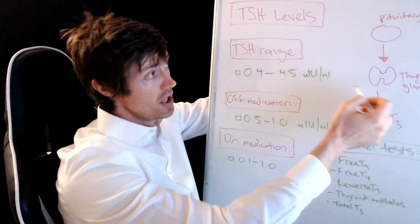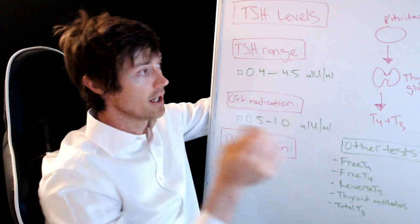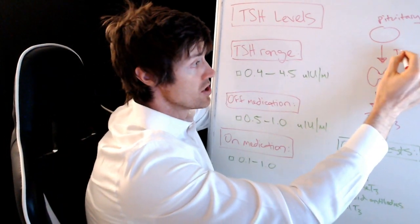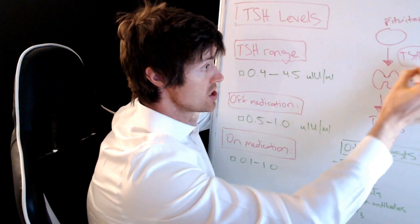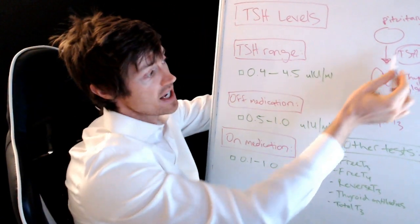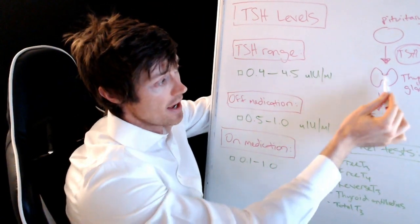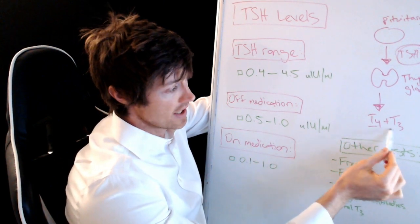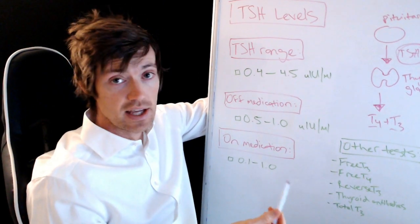So first of all, you have in the thyroid system, you have your pituitary gland, which is in your brain, and that pituitary gland secretes TSH. Okay, so this is where we're looking, TSH. And TSH acts on the thyroid gland and tells the thyroid gland to produce T4 and T3. That's basically how it works, in a nutshell.